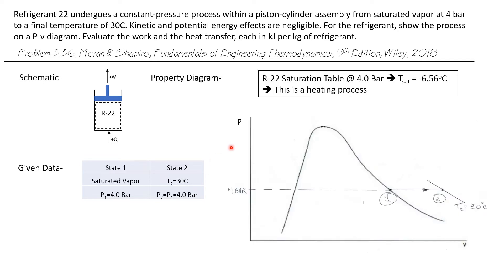Let's draw a PV diagram. The process begins at state 1, which is at 4 bar, and it's a saturated vapor.